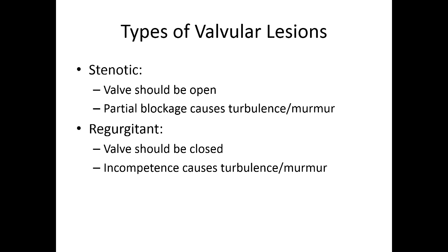There are two basic types of valvular lesions: stenotic lesions or regurgitant lesions. Stenotic lesions affect valves that should be open — the gates should be wide open, but calcification or some other issue is causing blockage, so as blood ejects through it, it creates turbulence and a murmur. Regurgitant lesions affect valves that should be closed — if the valve is leaking when it should be closed, you also create turbulence, a murmur, and additional heart problems down the road.